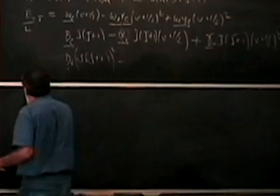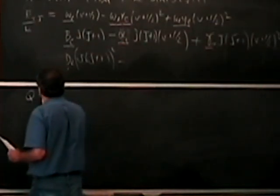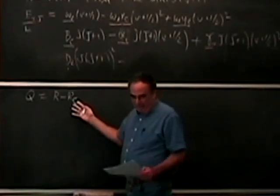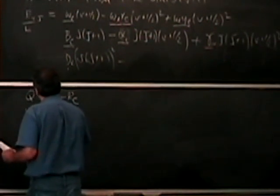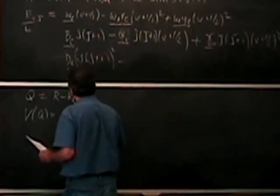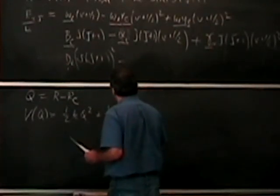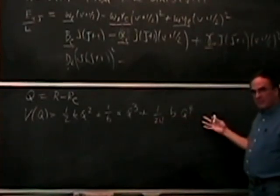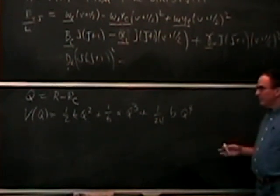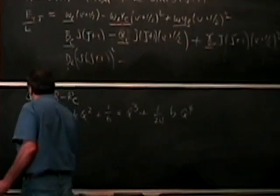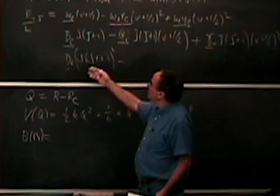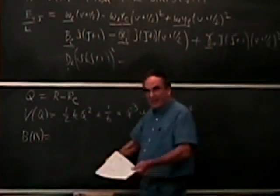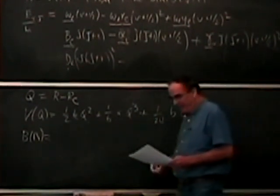Let's set this up. First, we like q rather than r, and we define q = r − r_e, so at equilibrium q is zero. Then V(q) = ½kq² + (1/6)aq³ + (1/24)bq⁴, which is just the power series in q. For B(r): it's a good idea to expand it in the same coordinate q and then combine terms so we don't have to do too much algebra after the fact.